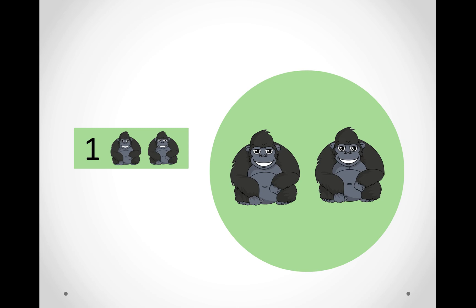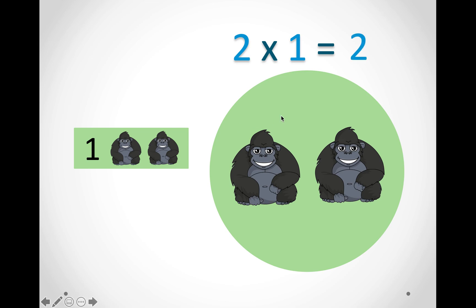In this picture we have one group and in this group we have two gorillas. So we will say two times the number of groups which is one. Two times one equals two.